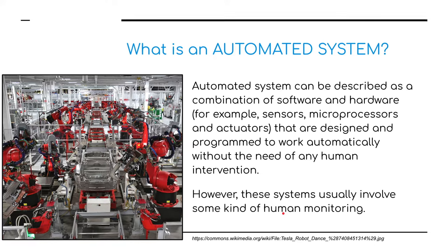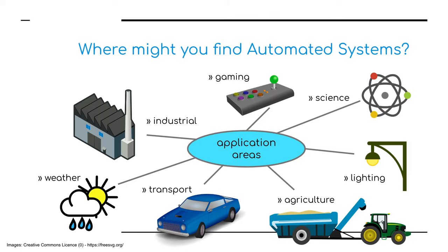However, these systems usually involve some kind of human monitoring. Where might we find automated systems? In industry, for monitoring weather, in transport — we've just seen with the Tesla factory — agriculture, lighting, science, and in gaming.